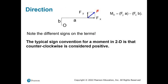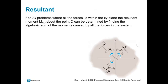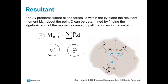The standard sign convention for 2D moments is that counterclockwise is positive. To determine the direction, imagine the body is pinned at O and decide which way it would rotate due to only that force acting. For the resultant moment in 2D, where all forces lie in the XY plane, you find the algebraic sum of all individual moments. For example, F1 at distance D1 causes counterclockwise rotation — positive; F2 causes clockwise rotation — negative.